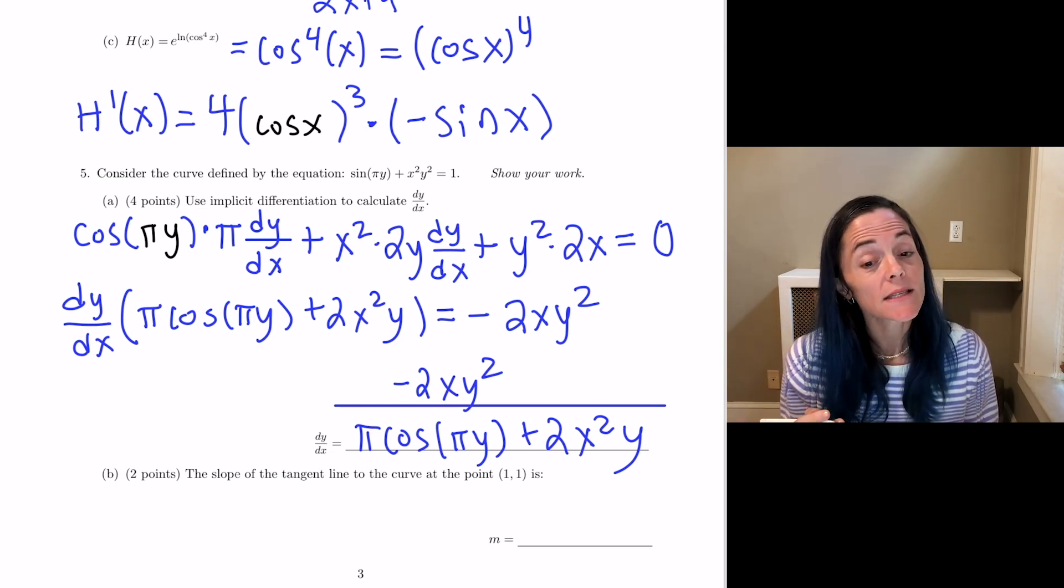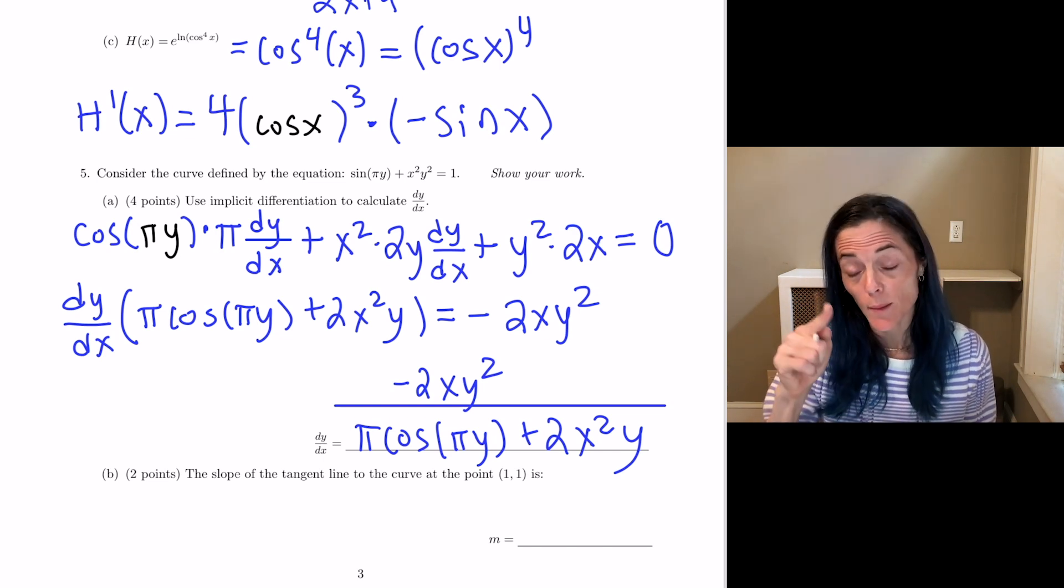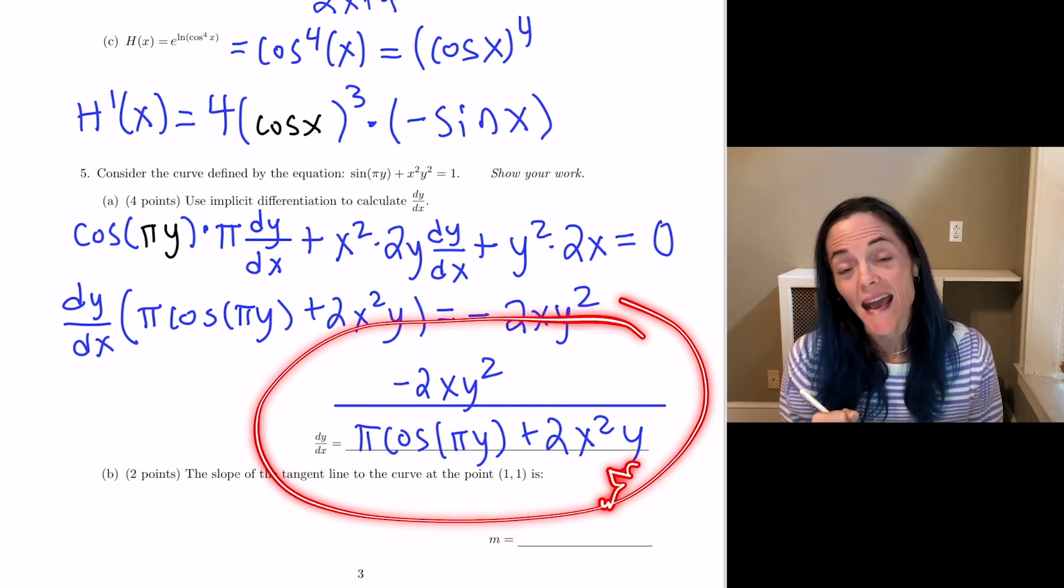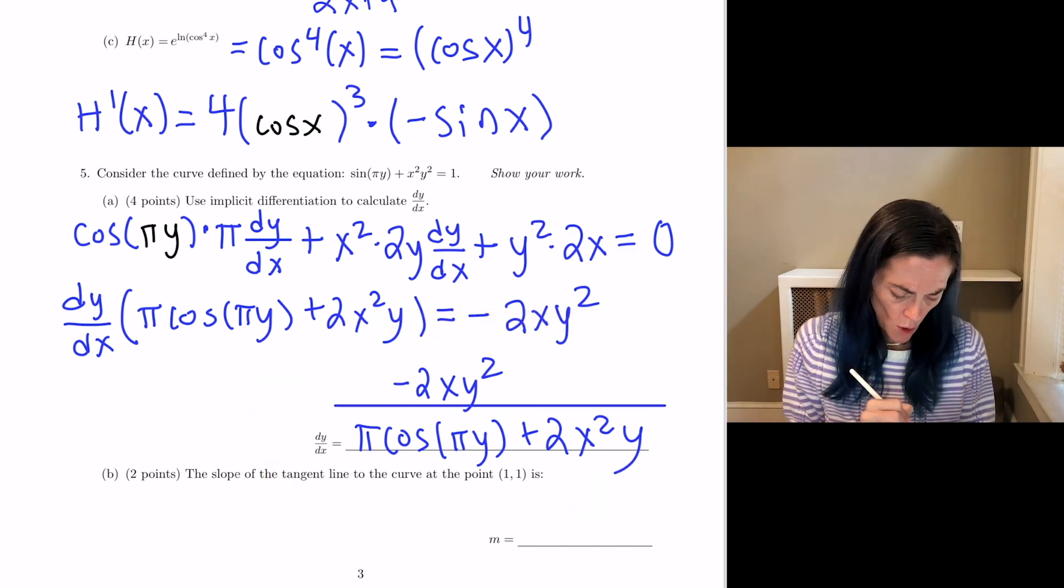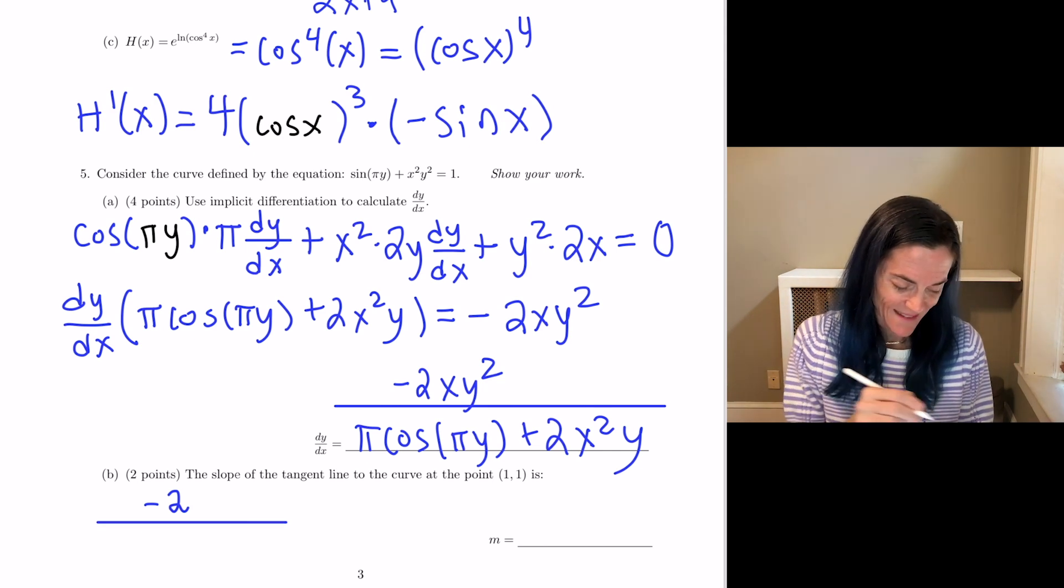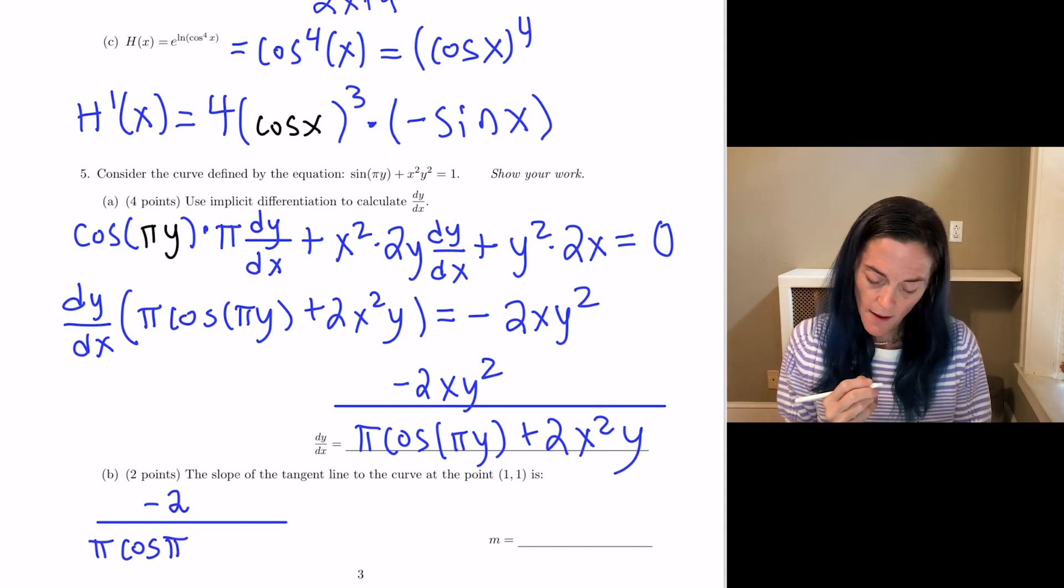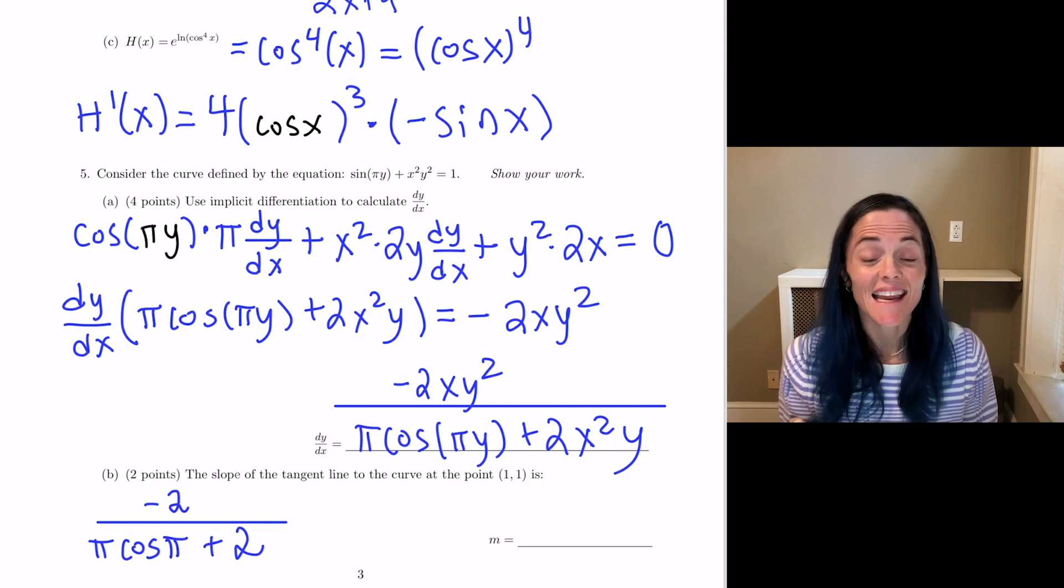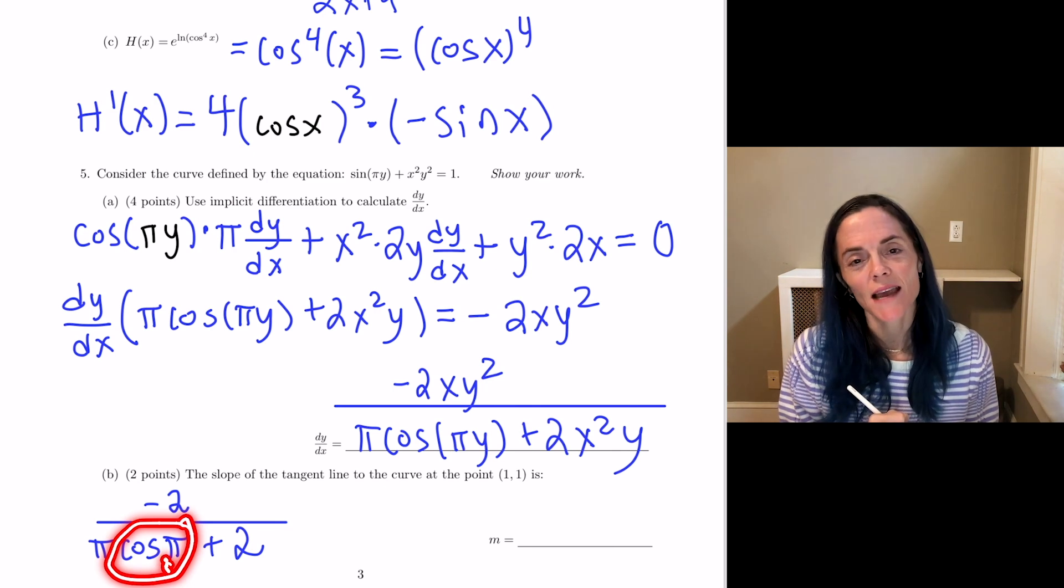Okay, we have dy dx, and we see x's and y's in this expression, this is to be expected. Now, we have a second part here. We want the slope of the tangent line to the curve at the point 1 comma 1. So, we take this and we evaluate when x equals 1 and y equals 1. So, I get minus 2, 1 times 1, over pi, cosine pi, plus 2.